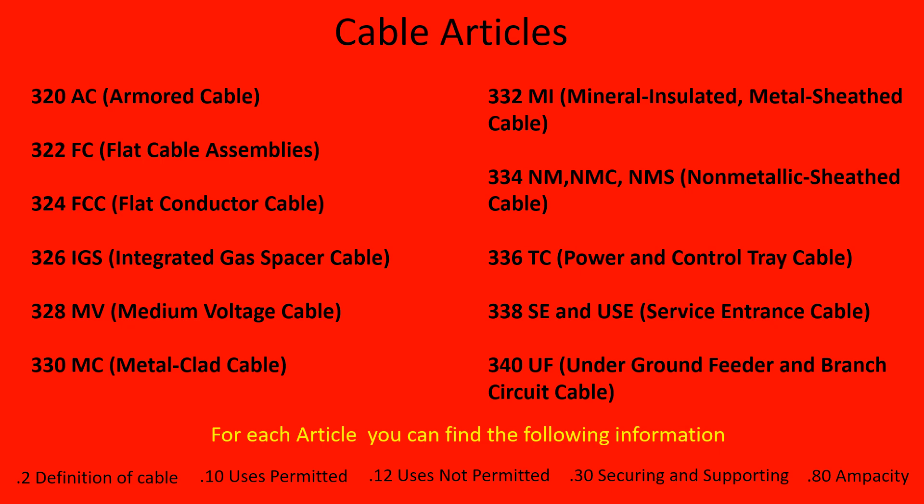To recap: if you have a dot-two, it's going to tell you the definition of each one of those cables. A dot-ten tells you the uses permitted. A dot-twelve tells you the uses not permitted. The dot-thirty tells you how to secure and support it. And the dot-eighty tells you the ampacity — how you deal with the ampacity of that conductor.